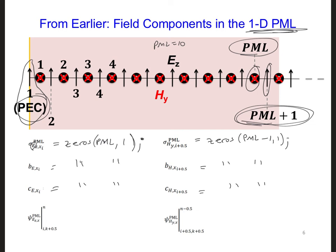Now, since we have to store the psi values at all of the EZ and HY field locations within the PML, the size need to be matrices that extend over all the K indices in the PML as well as the I indices. So we can write this as zeros, PML. I'm going to write PML plus one so that we can call on the same indices as the EZ component.